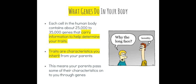Genes have special functions in your body. Each cell in the human body contains 25,000 to 35,000 genes that carry information to help determine your traits. That includes physical traits like eye color, hair color, and hair texture, and non-observable traits like whether or not you're at a greater risk to develop certain diseases. Traits are characteristics that you inherit from your parents, meaning your parents can pass some of their characteristics on to you through genes.